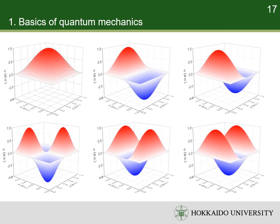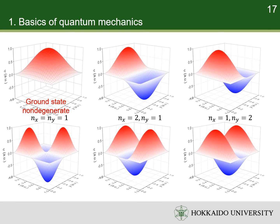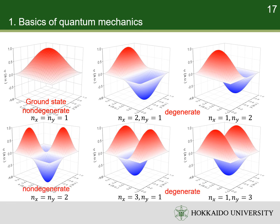Here I show the shapes of six wave functions of the lowest energies. The ground state is the state of N_x equals N_y equals 1, which we can call state 1-1. The states of the second lowest energy are state 2-1 and state 1-2 — they are degenerate states. Similarly, state 3-1 and state 1-3 are degenerate. In contrast, state 2-2 is non-degenerate, because no state has the same energy as it.